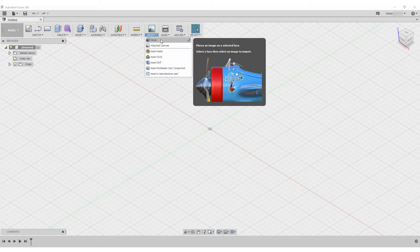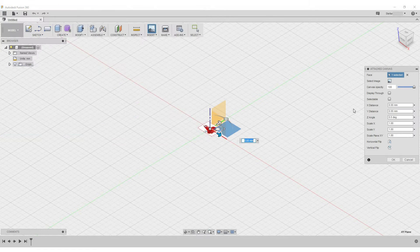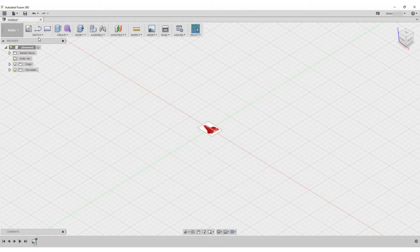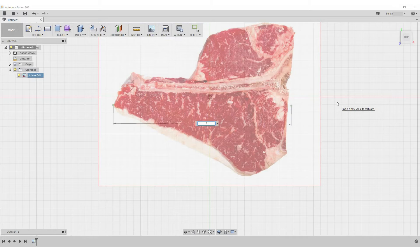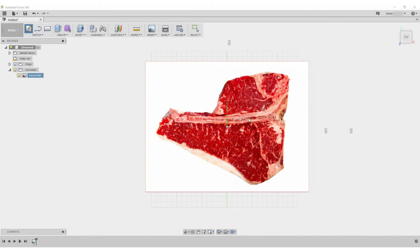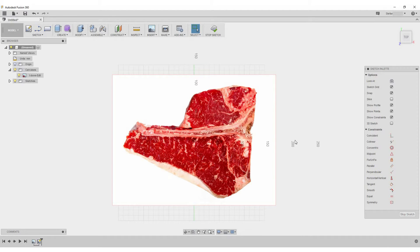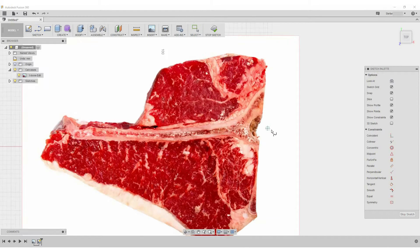I downloaded a picture of a T-bone steak and inserted it as a canvas into Fusion 360. The canvas is scaled with a calibration function to the size we later want it to be. I created a sketch and used the spline function to draw the outline of the steak. I'm making it a little bit bigger so that the cutting board doesn't get too small.